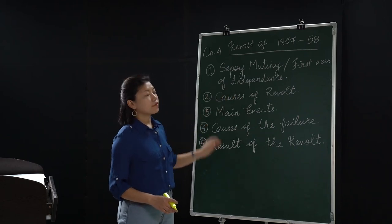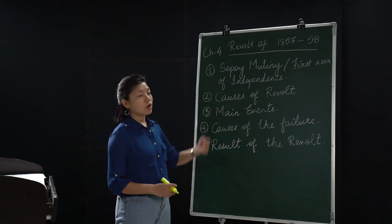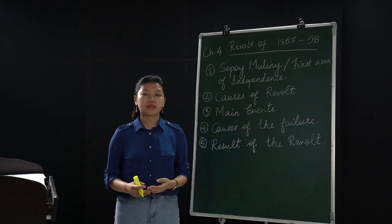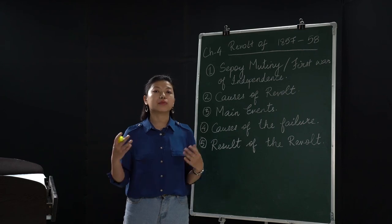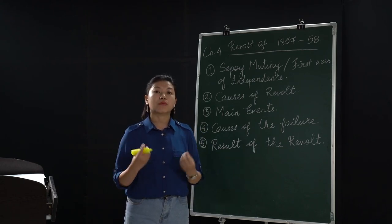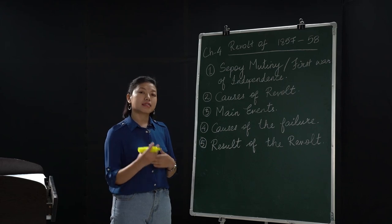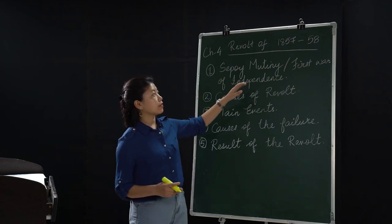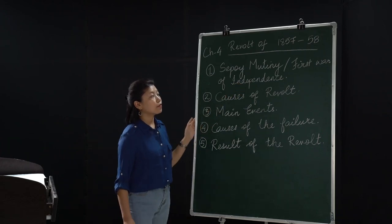The first subtopic is Sepoy Mutiny, also known as the First War of Independence. The Sepoy Mutiny was termed by the British, while the First War of Independence was termed by Indian historians. During the revolt of 1857 and 1858, so many Indians united and took part together. Earlier, Indians were fighting among themselves, annexing one another's states. But when the Revolt of 1857 came, the Indians united and decided to throw out the British government from India.